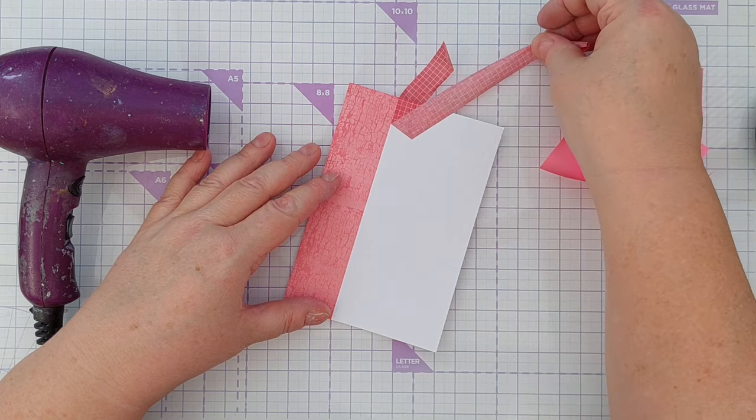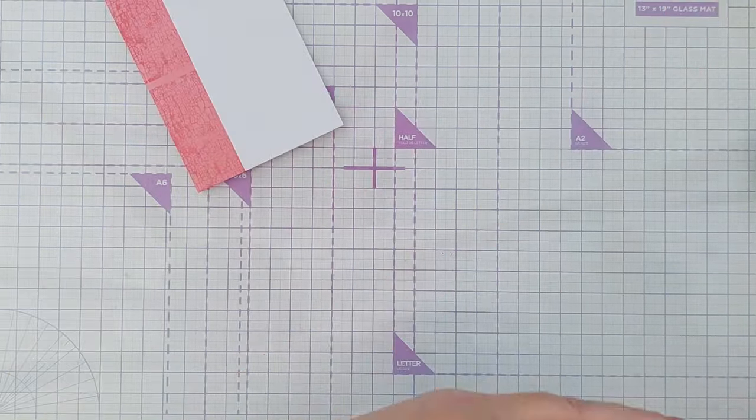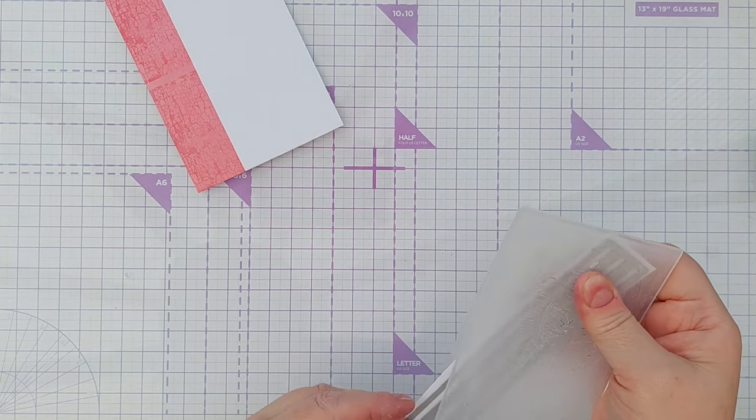Next, I used the strip dies to cut some strips from smooth white card. I used my Gemini mini die cutting machine.